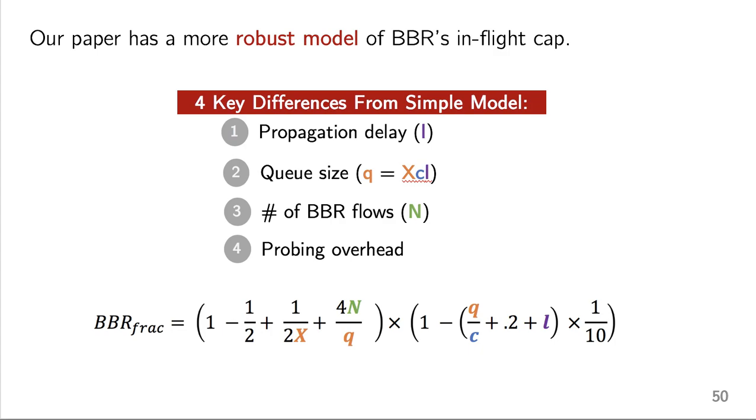So I made a lot of simplifying model assumptions when I was talking about this model. But our paper has a more robust model of BBR's in-flight cap. We add in a lot of the parameters that we sort of ignored in the simple model. But what I want you to notice here is that I've highlighted all of the variables that impact BBR's fraction of the link and its throughput. And again, I want to draw your attention to the fact that none of these variables depend on either the loss rate or the number of loss-based flows. So BBR does not care about how many loss-based flows it's competing with.